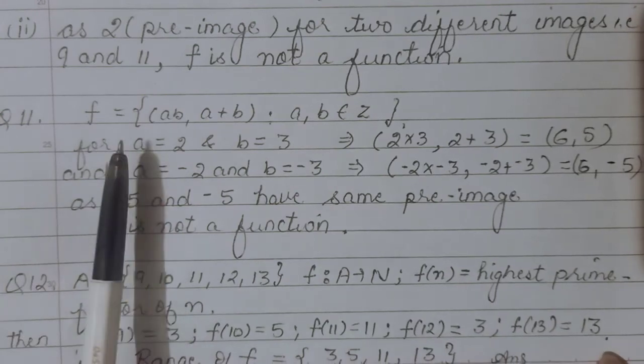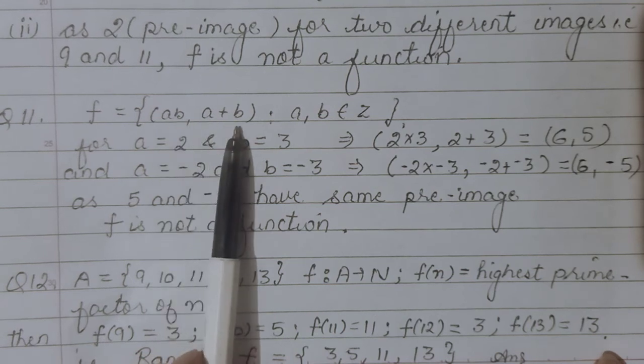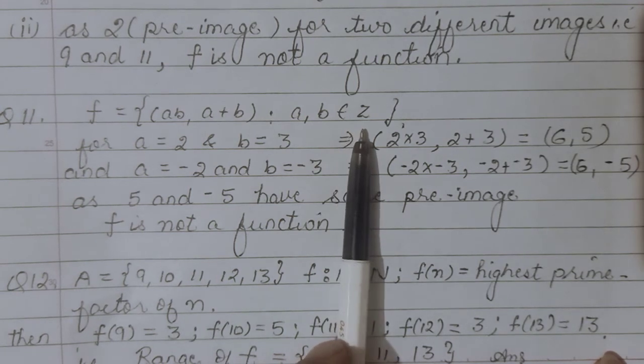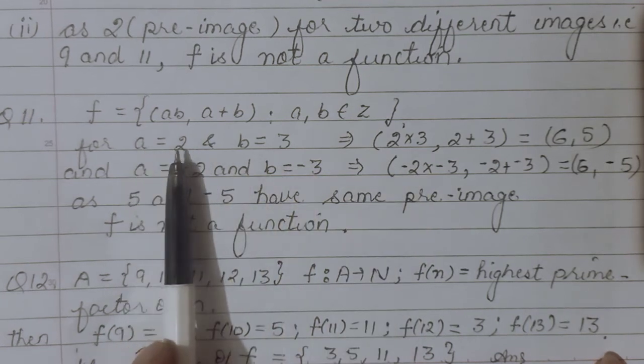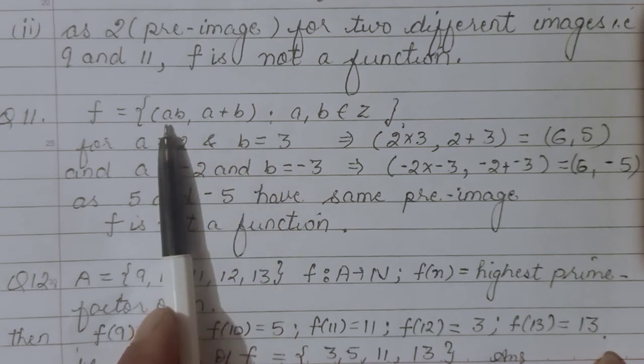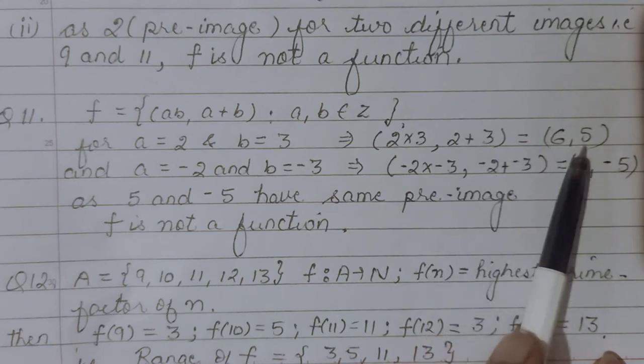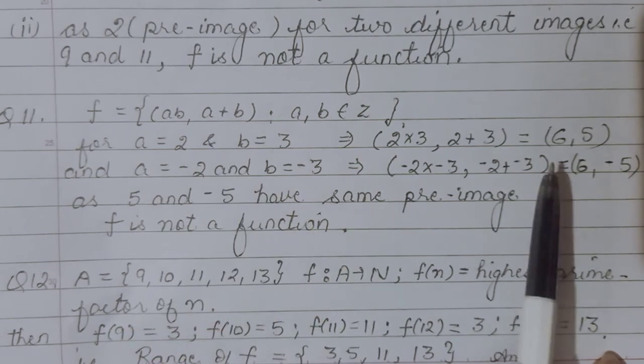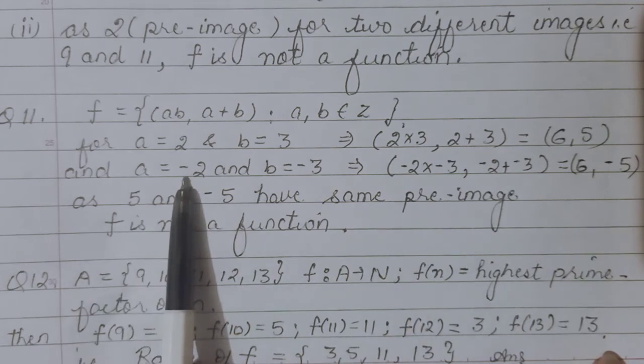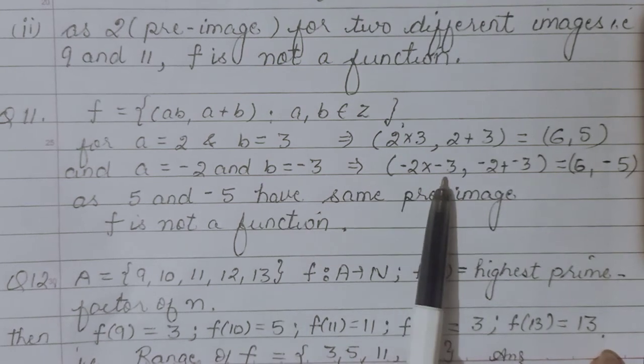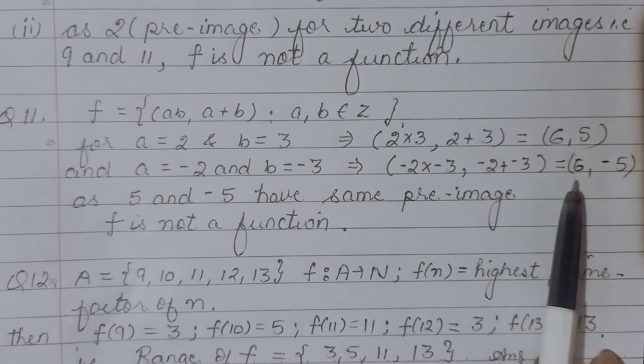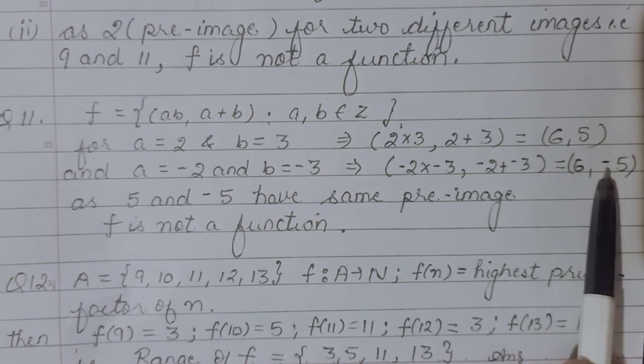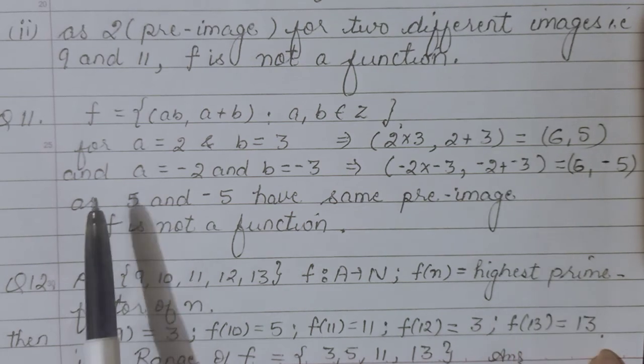The eleventh question: they've defined the function as (ab, a+b) where a and b are integers. Checking whether it's a function with examples: if a=2 and b=3, the ordered pair is (6,5). Now if a=-2 and b=-3, we get (6,-5). So 5 and -5 have the same pre-image 6, therefore it cannot be a function. Pre-image should not repeat for a function.